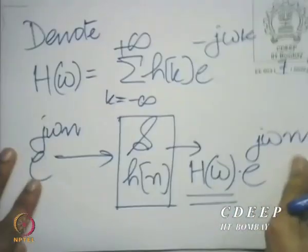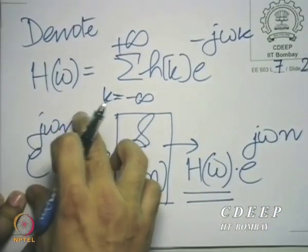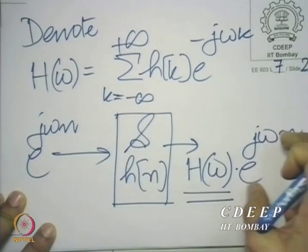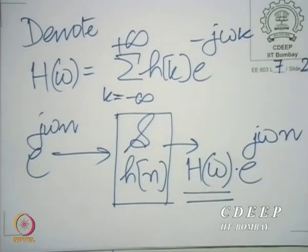We need to answer whether there is something we should impose upon the system to make this summation convergent. If this summation converges, we have done what we wanted to. When we give a complex exponential of normalized angular frequency omega to the system, what we get out is the same complex exponential multiplied by a complex constant — there is no other change. That means each complex exponential is dealt with in a decoupled way.